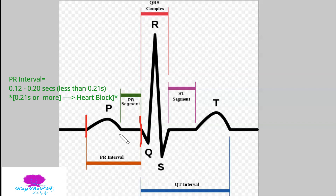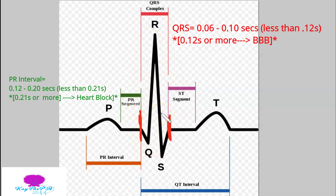Next is our QRS complex interval. You measure from the beginning of the Q to the beginning of the S. The QRS has to be less than 0.12 seconds. The textbook typically says between 0.06 and 0.10, but if you remember it has to be less than 0.12, you'll be okay. If it's greater than 0.12, we call it a bundle branch block.